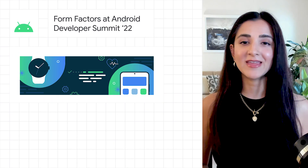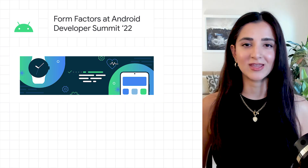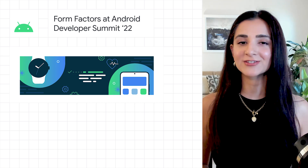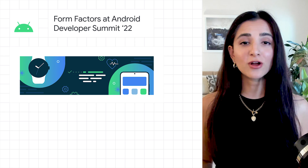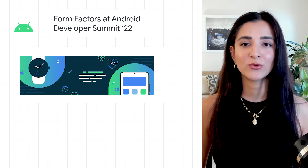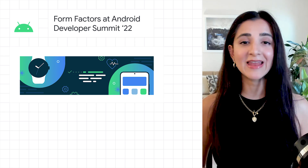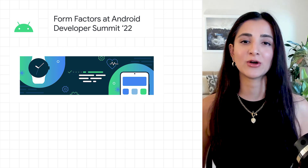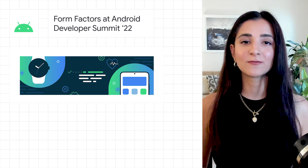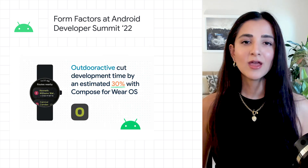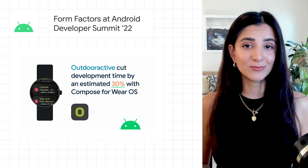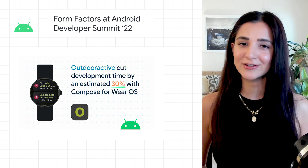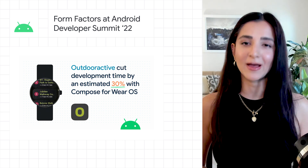The second stop in the Android Developer Summit was last week. In case you missed it, here are the top three announcements about form factors at the summit. The large screen category is growing, with over 270 million active large screen Android devices and an expanding portfolio of tablets, desktops, and foldables to choose from. Compose for Wear OS is stable, bringing the modern UI toolkit to the wrist and making it simpler than ever to build exceptional Wear OS apps.